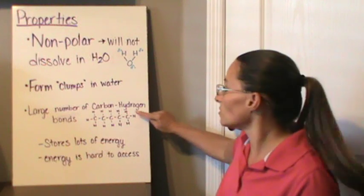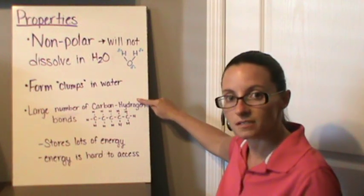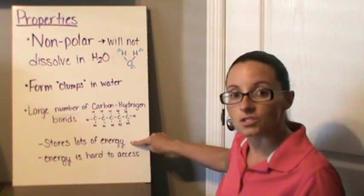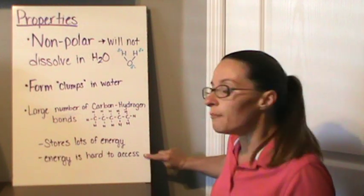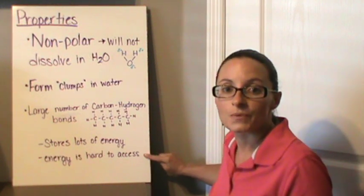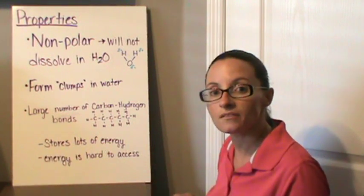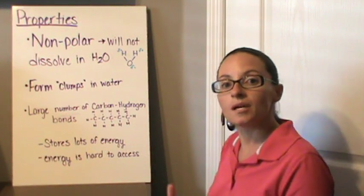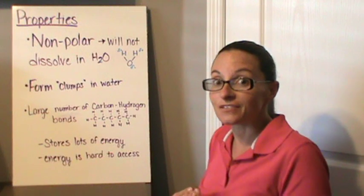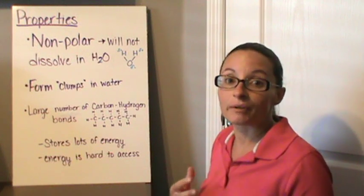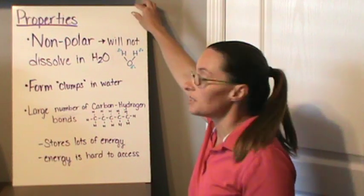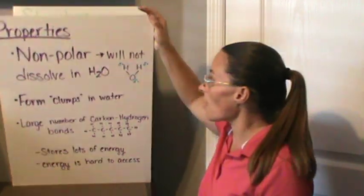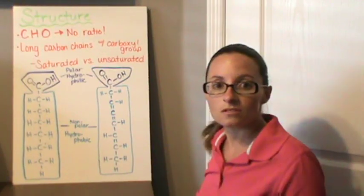Because of the large number of carbon and hydrogen bonds, it stores a lot of energy, which is one of its functions. But that energy is hard to access, which is one of the reasons why we're able to store all that energy in our body as fat, but then we can't burn it off as easily once we actually store it in our bodies. So those are some of the major properties. Let's look at the structure.